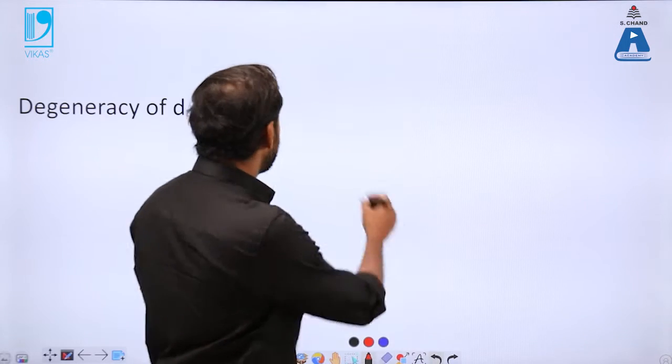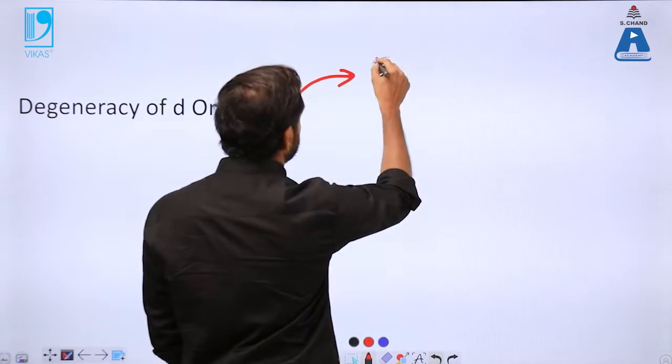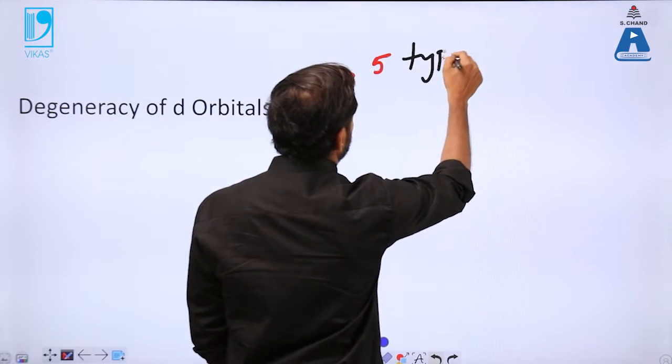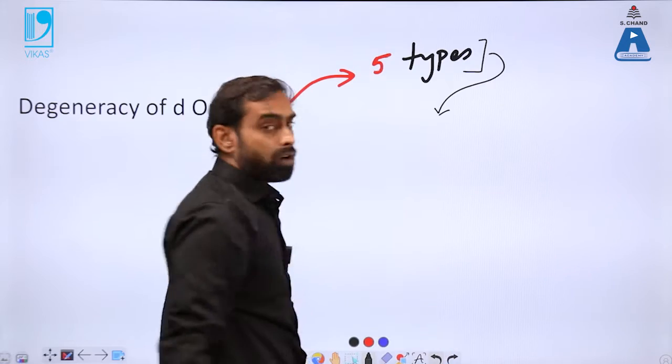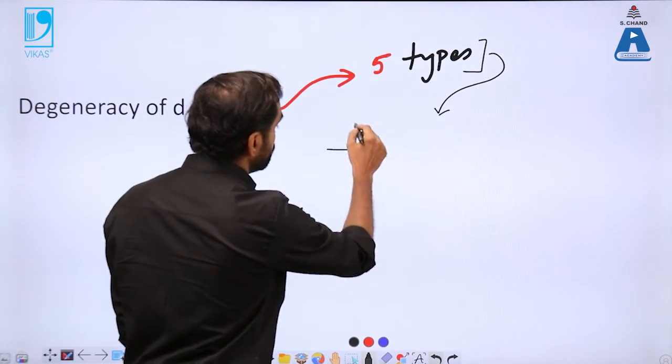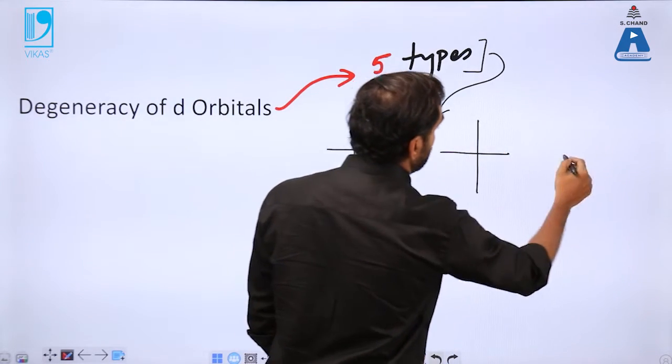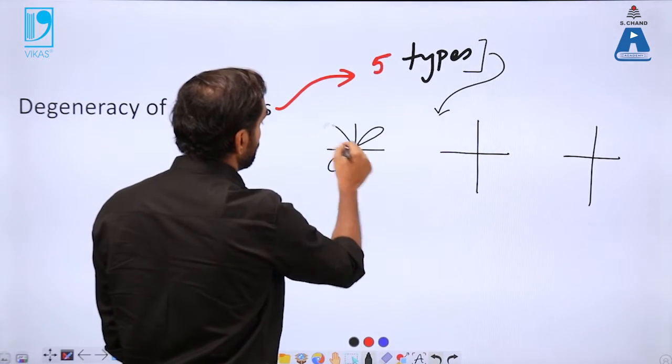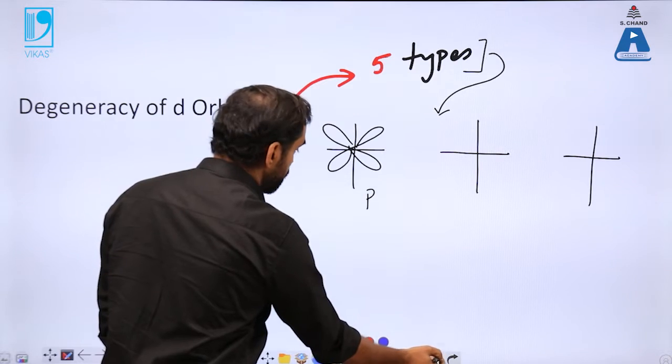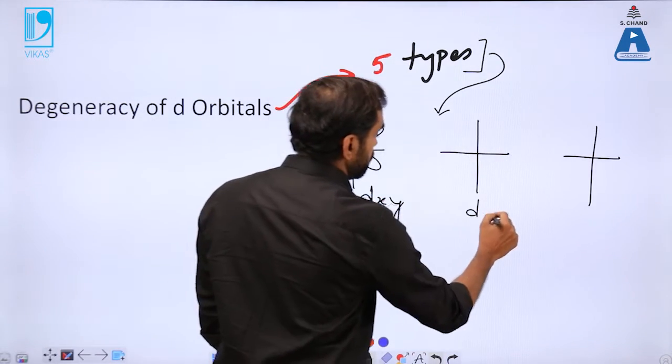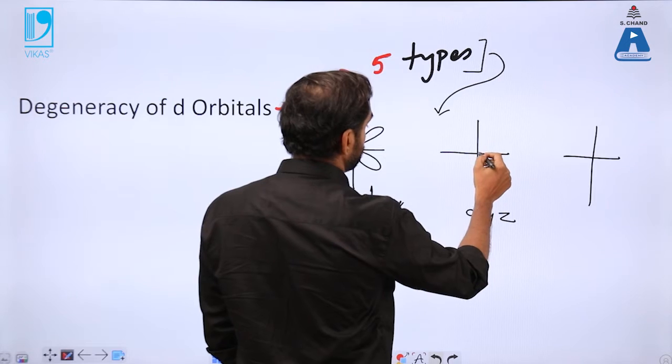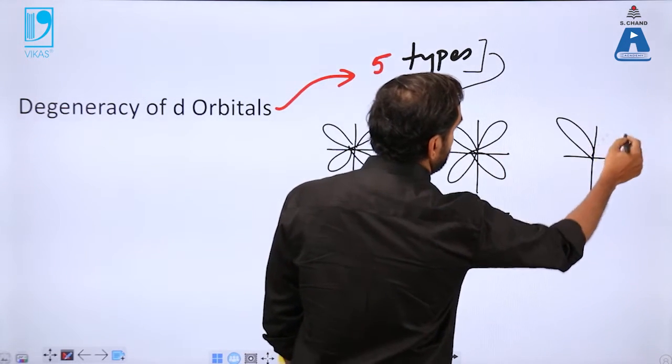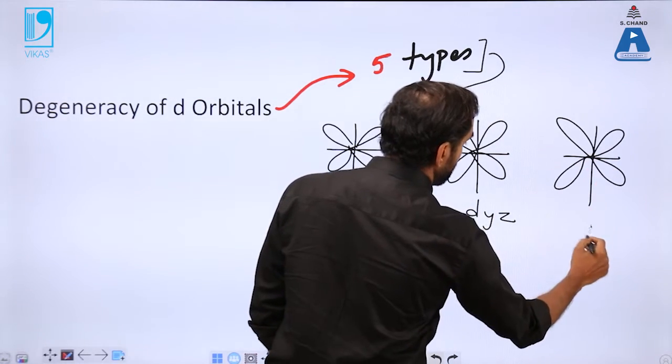d orbitals are primarily of five types. These five types of d orbitals, they are due to the differences in the arrangement across axis. d orbitals, you have d xy, then d yz, and d zx.